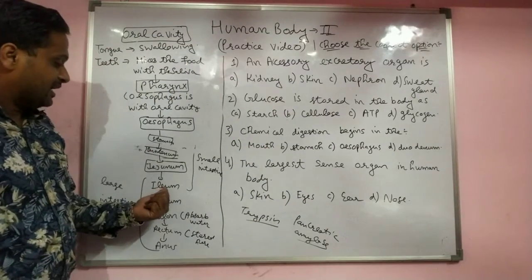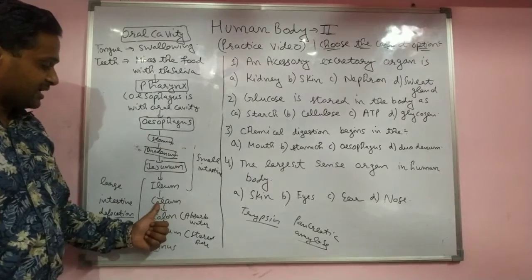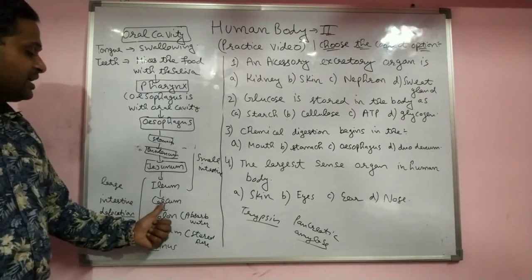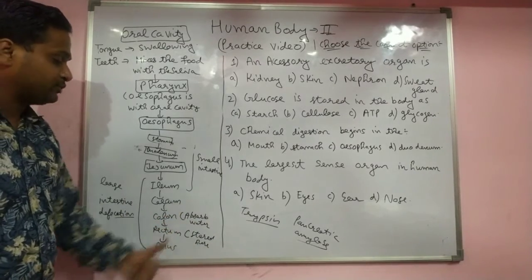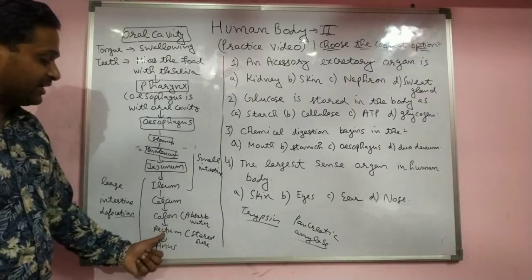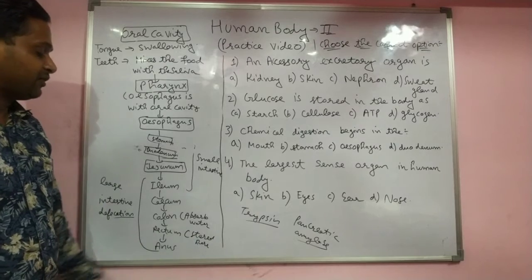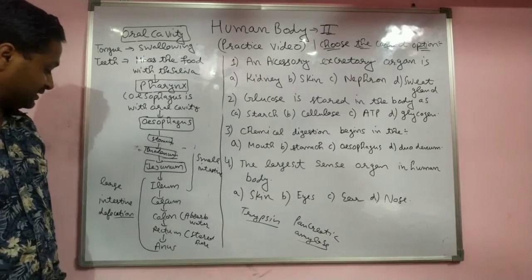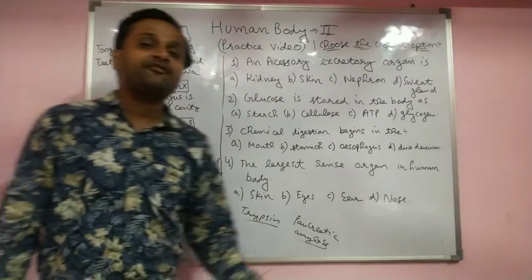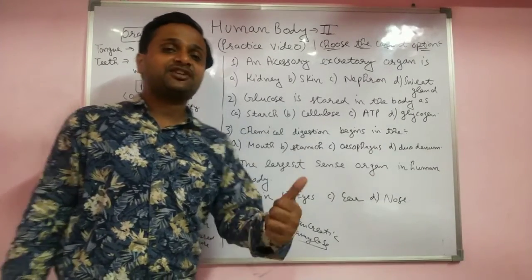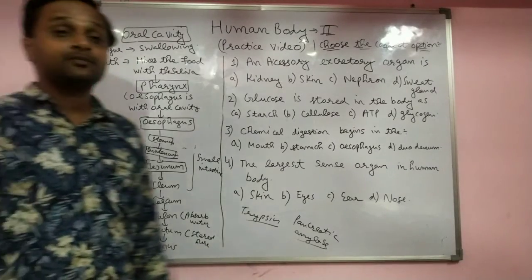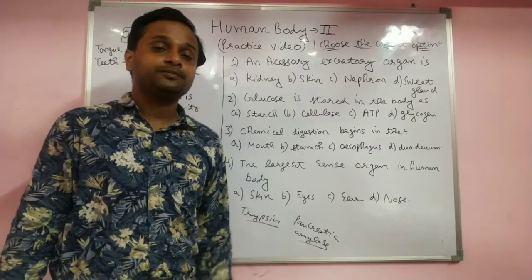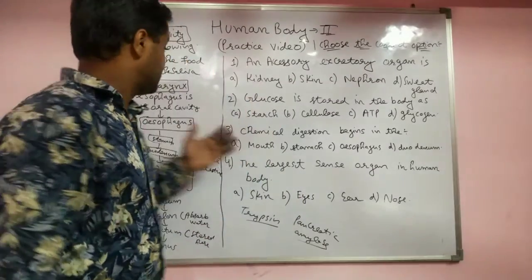In the large intestine, food first enters the caecum. Then the colon absorbs extra water. The rectum stores the undigested food, which then comes out through the anus. This removal of undigested food is called defecation.